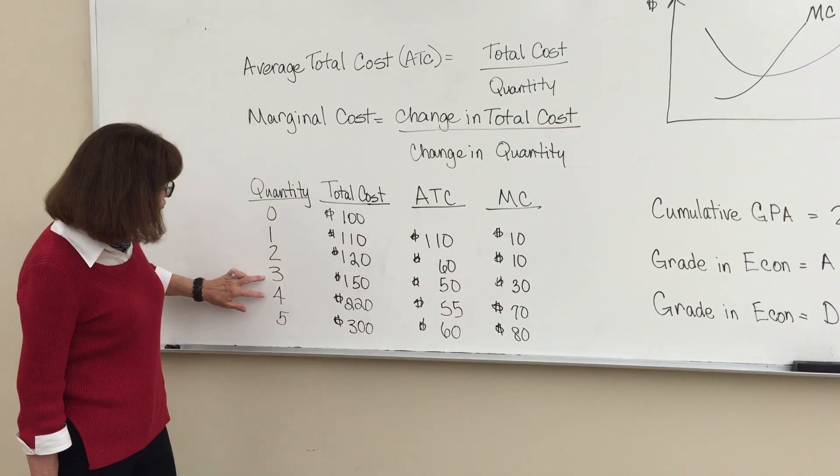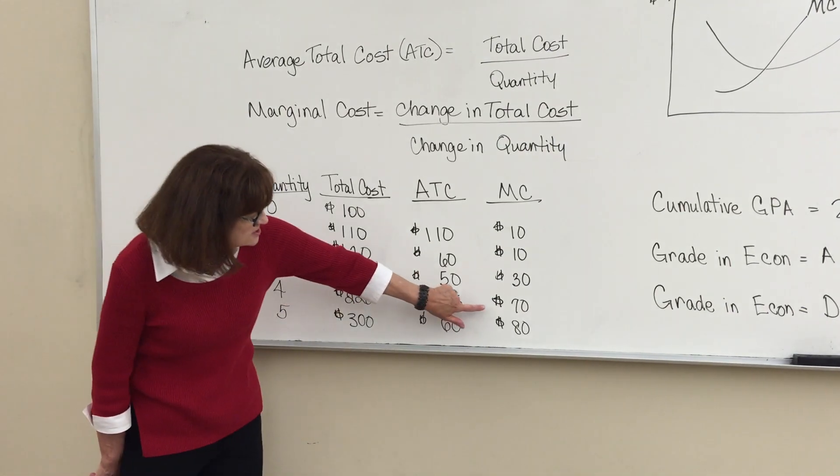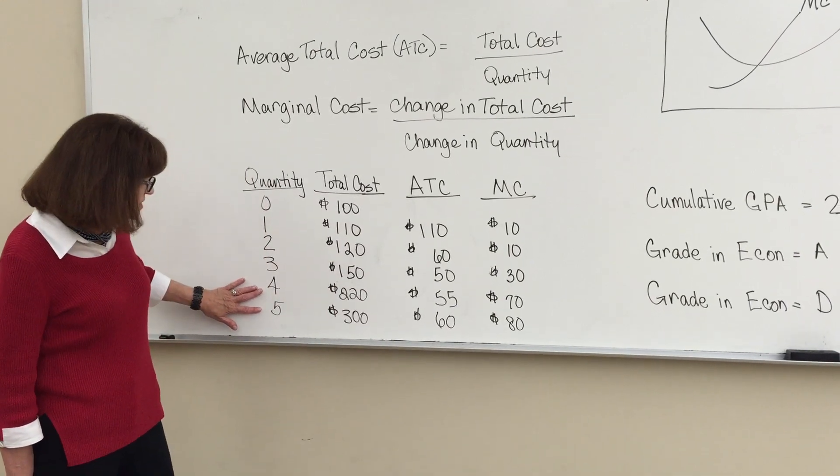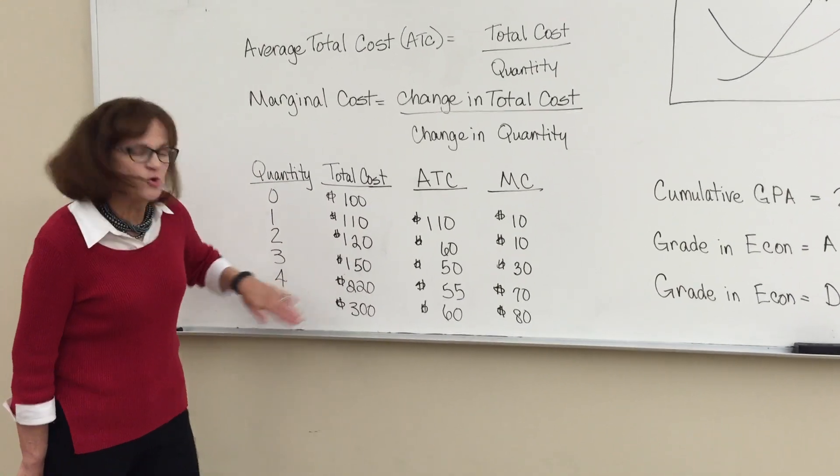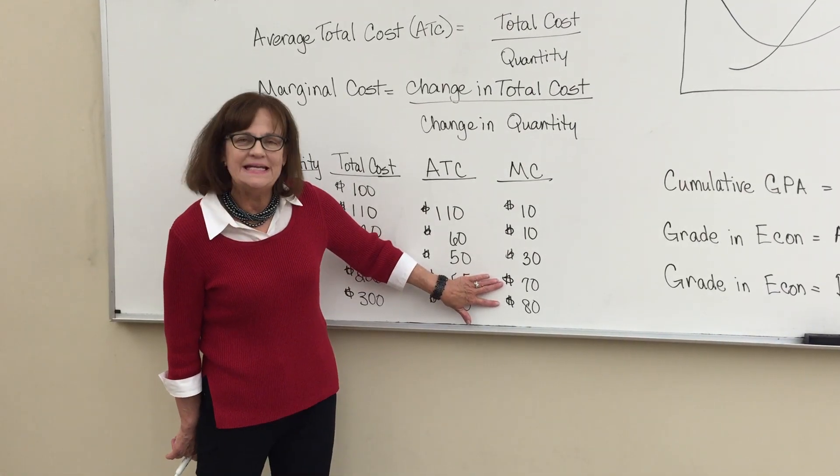When you produced your fourth unit, your total cost went up by $70. So the marginal cost of the fourth unit is $70. When you produced five units, your total cost increased to $300. So the marginal cost of that very last unit is $80.